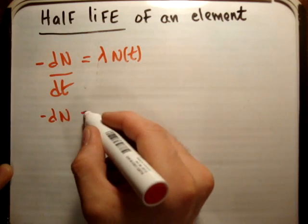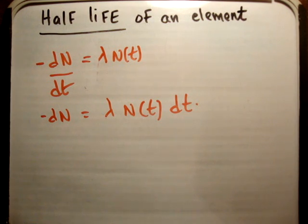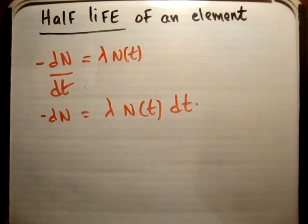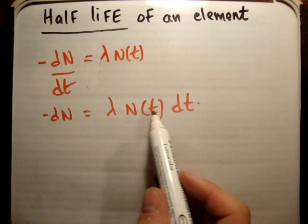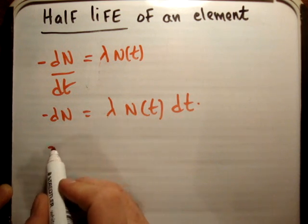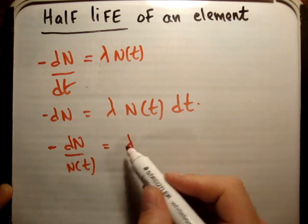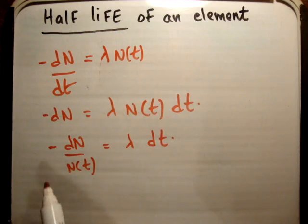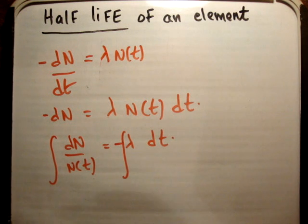So we have: negative dn equals lambda times n(t) times dt. We want to get an expression for n(t), so we'll integrate this. To do that, we first do separation of variables — putting all the dn terms on one side and everything to do with time on the other. Integration is basically a way of adding all these things up.